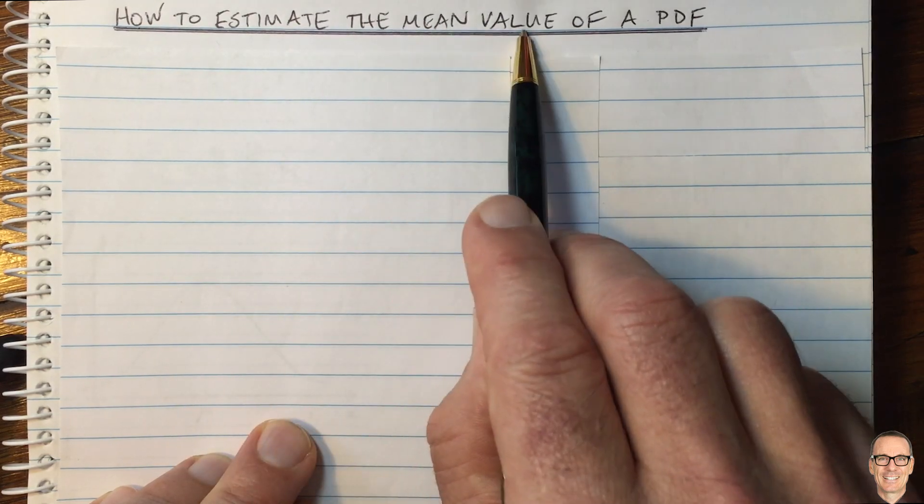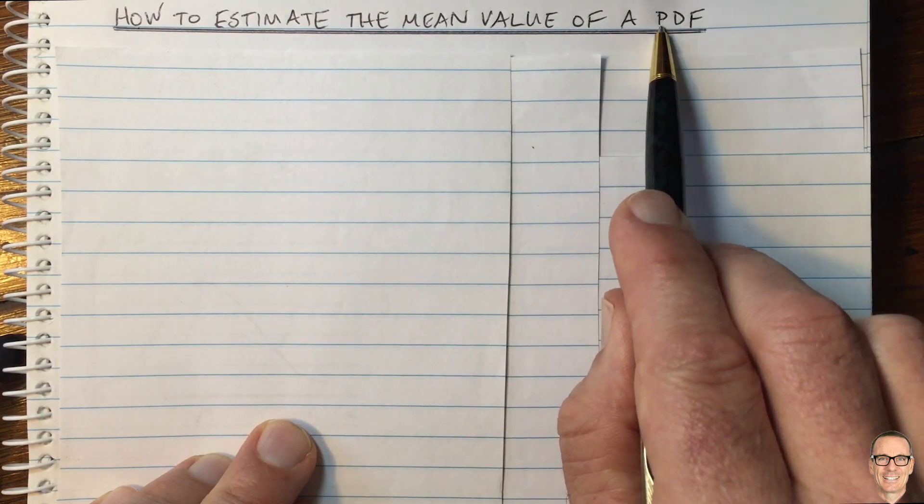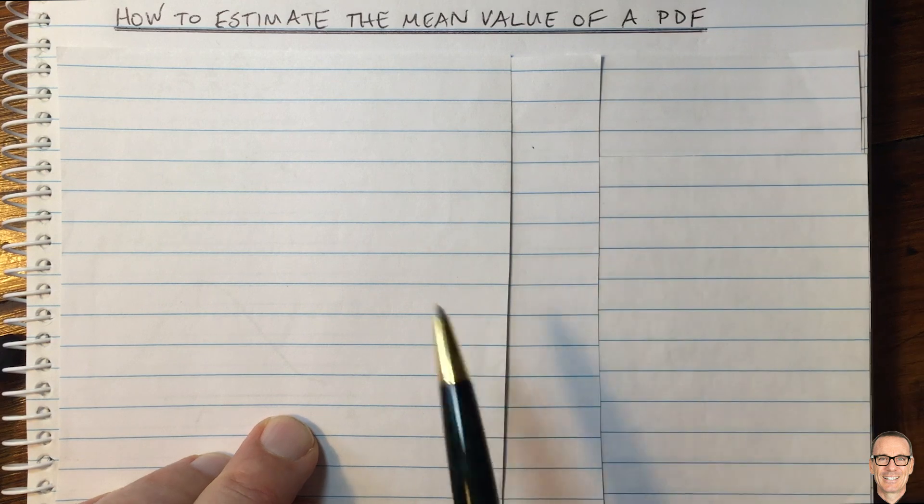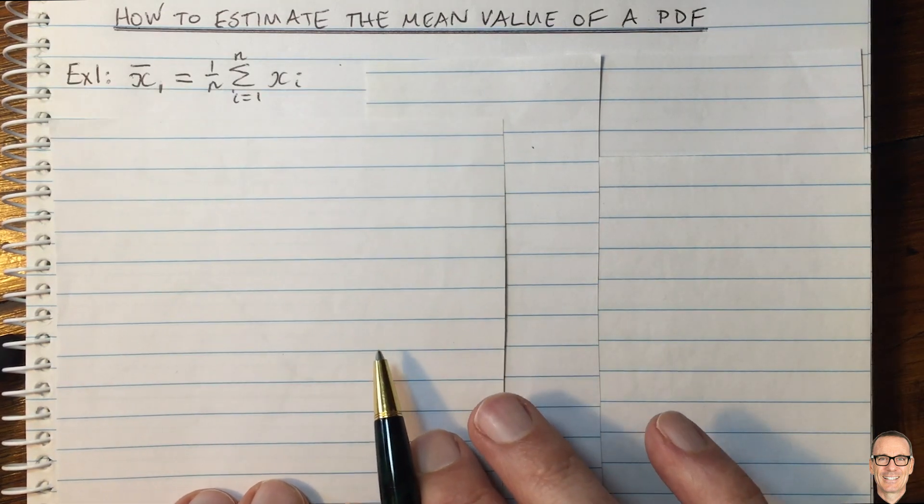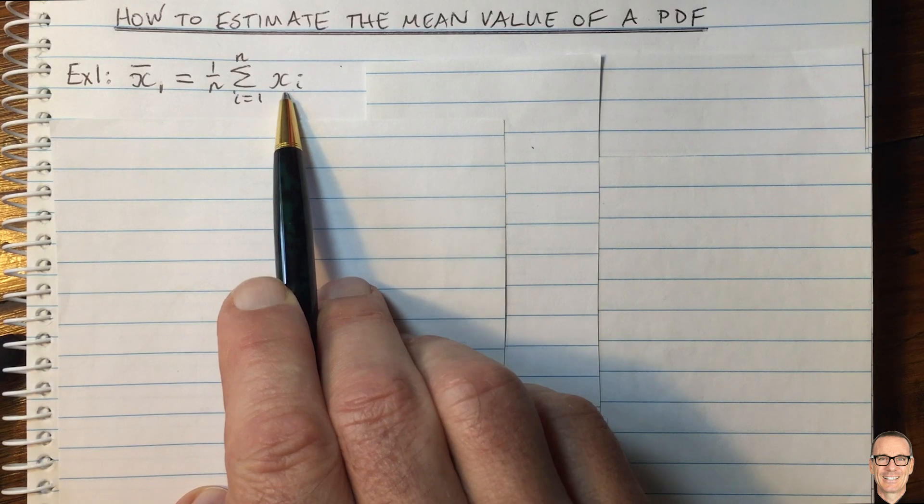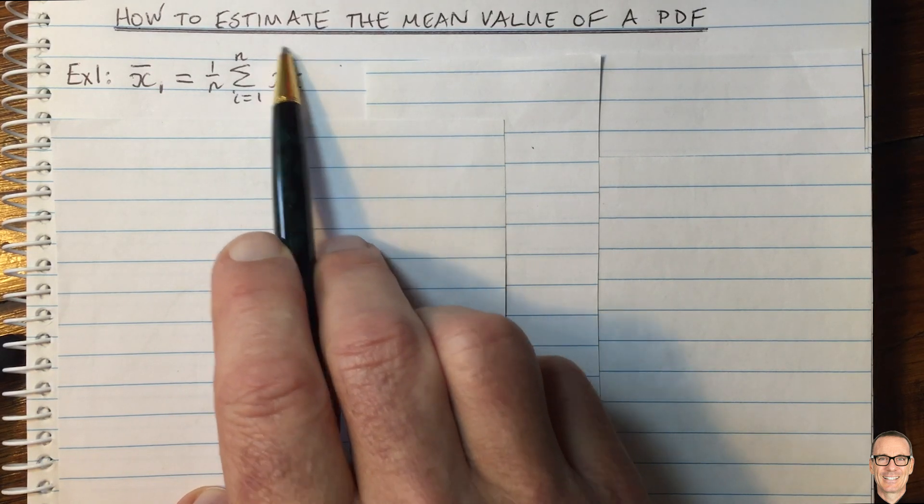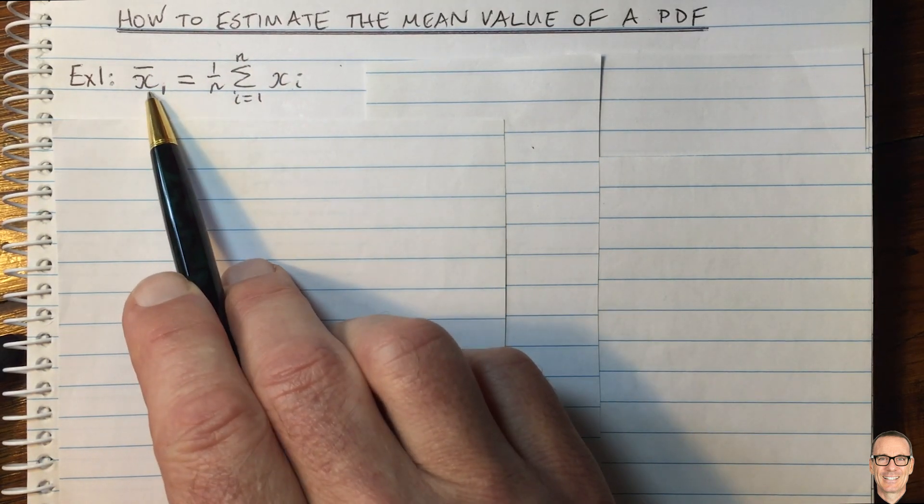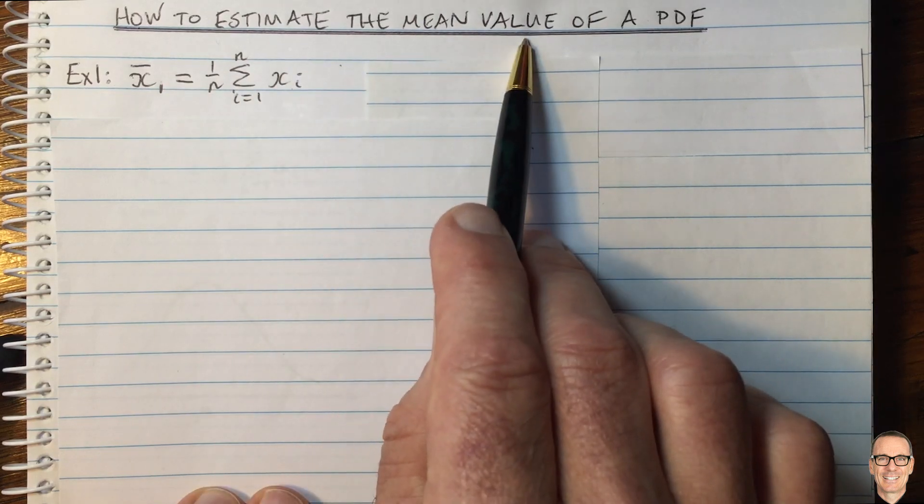How do you estimate the mean value of a random variable's probability density function? Well, you can do an experiment, we'll call it experiment 1, and you can draw samples from the random variable and then simply average those samples. And that will give you an estimate of the mean value.